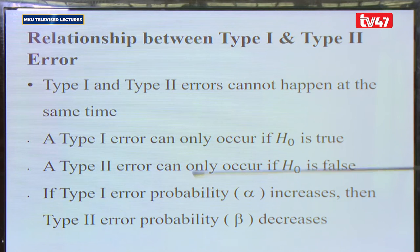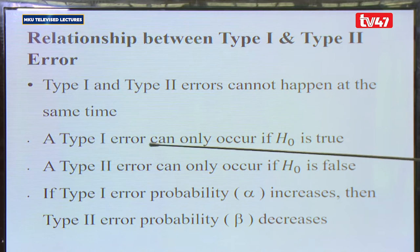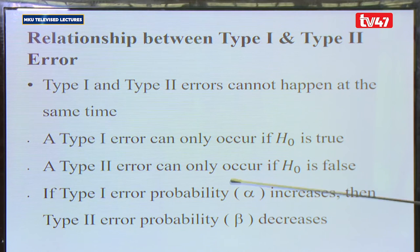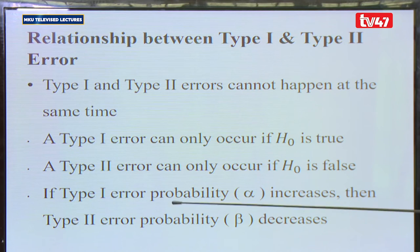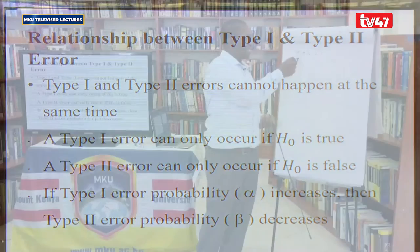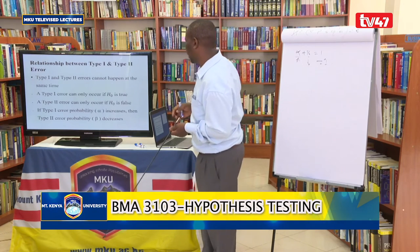Type 1 and Type 2 errors cannot happen at the same time because we either reject or accept. Type 1 error can only occur if H₀ is true; Type 2 error can only occur if H₀ is false. If the Type 1 error probability alpha increases, then Type 2 error beta decreases, because alpha plus beta must equal 1. So if one increases, the other must decrease.